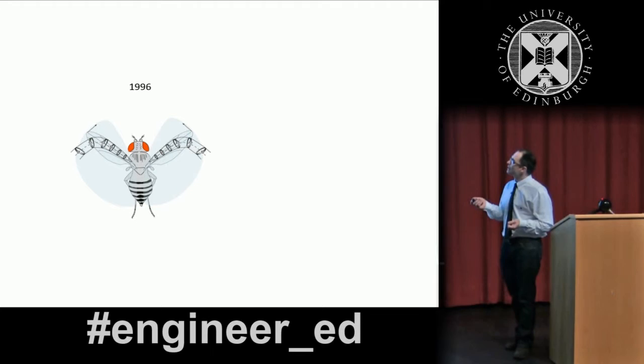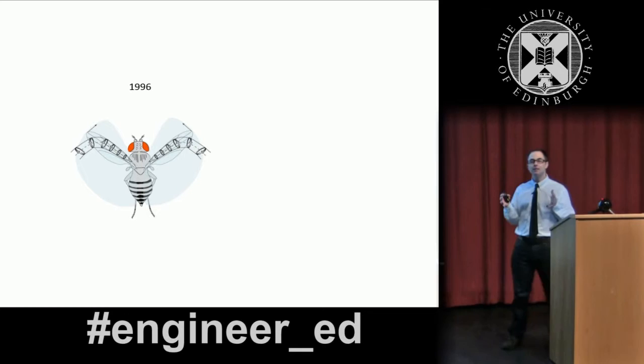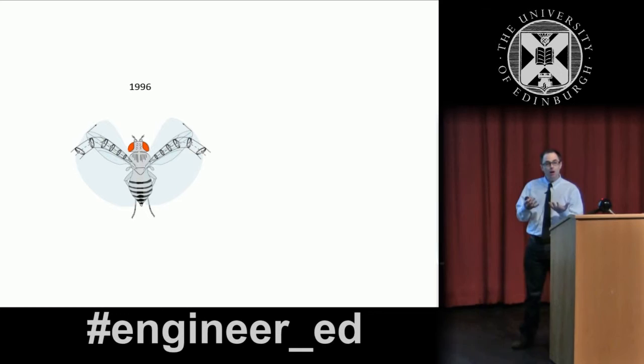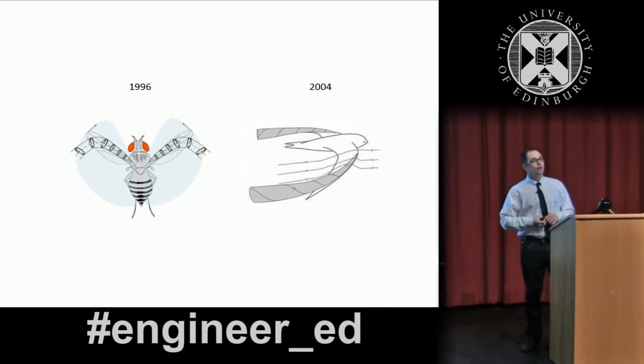The answer, we did not know until a guy in Cambridge found out that what the insects do is not to have attached or separated flow, but is to have a large vertical structure, which is this vortex here, which is called leading edge vortex. And the flow separates from the wing, but instead of going away, it starts swirling, and this very fast motion will generate lift, which is what the insect needs to fly.